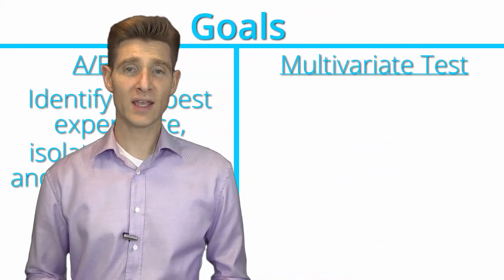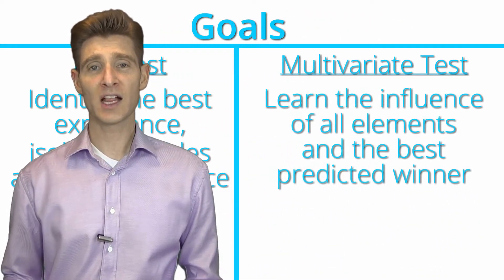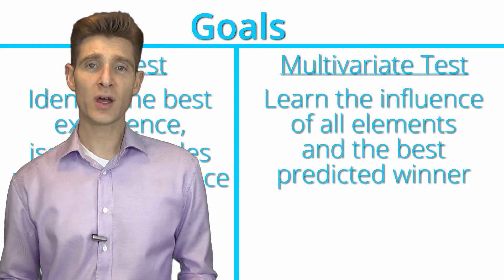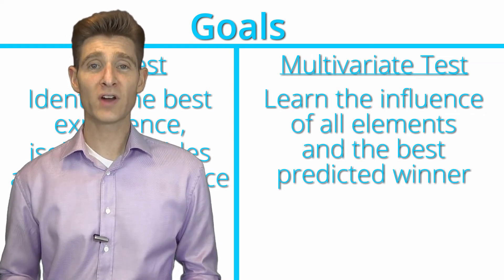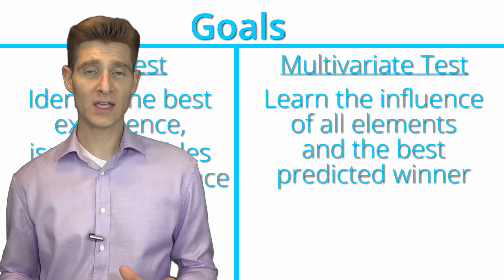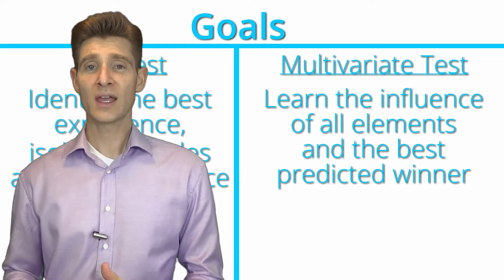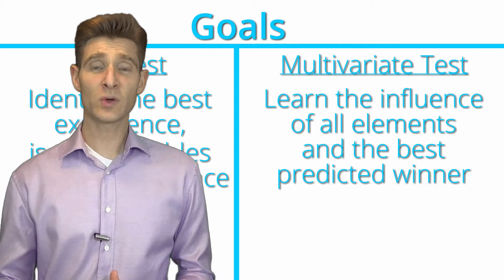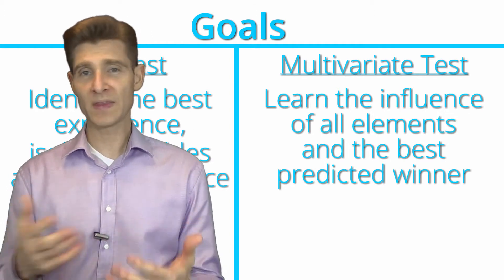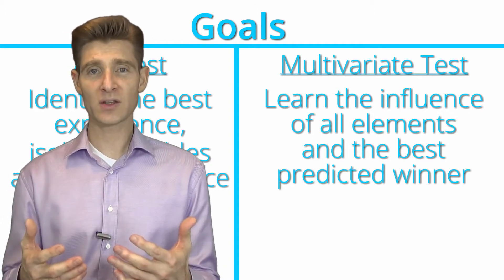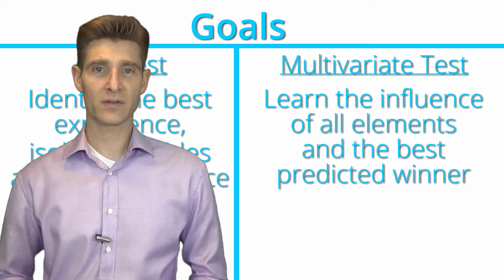The goal of the multivariate test, on the other hand, is to learn the influence of the elements you're testing and to help you identify the best predicted winner. The multivariate test looks at all the variables you tested and says this element has the most influence and is the most important. It will also say, as output, if you combine these different variables together, this will be the ideal variation you should have.